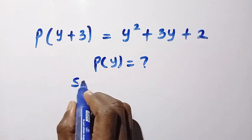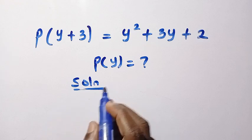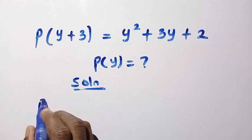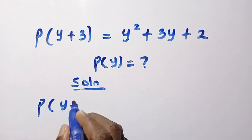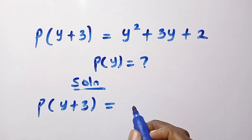So to solve this problem, we are going to consider two different methods here. From the function we have P of y plus 3 equals, we have the quadratic at the right hand side.